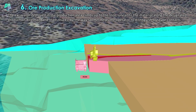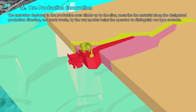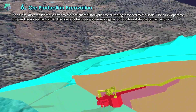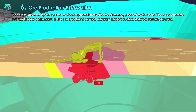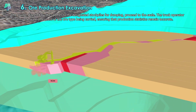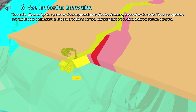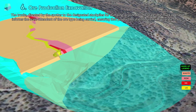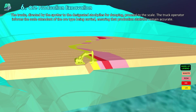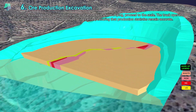The spotter helps the operator to distinguish ore type contacts. Trucks directed by the spotter to the designated stockpiles for dumping proceed to the scale.